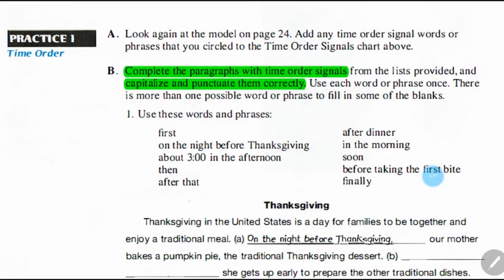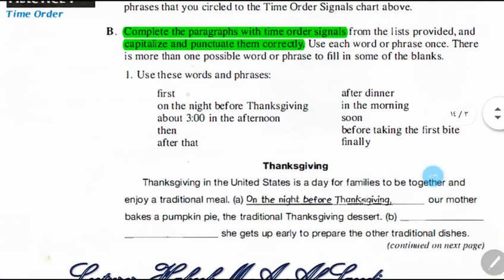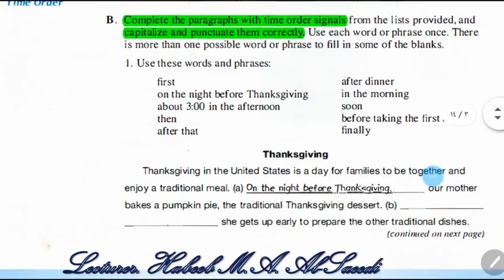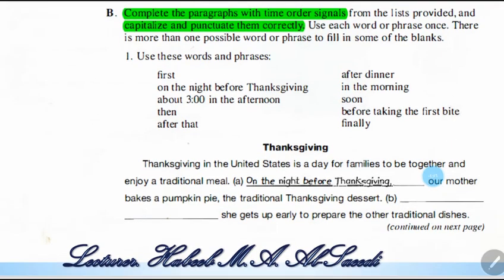In exercise B, complete the paragraph with the time order signals from the list provided. The time order signals given are: first, on the night before, about three in the morning, then, after that, in the morning, before taking the first bit. You have to use these time orders to fill in the paragraph, and you must also capitalize and punctuate them correctly.